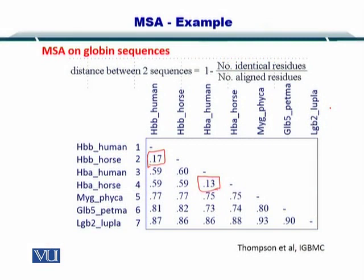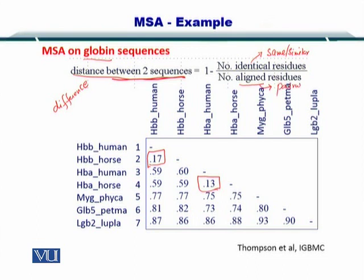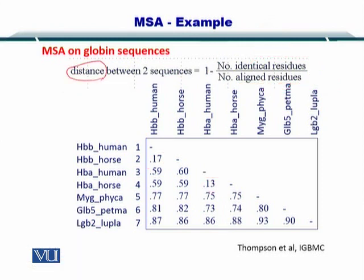Here we have an example of the globin protein from multiple species. The distance between two sequences, or simply the difference between two sequences, is equal to the number of identical or similar residues over the number of aligned residues in the pairwise alignment. You take this ratio, subtract it from one, and you arrive at the distance or difference between the two sequences. Once you have the distance between all sequences, you can construct something called a distance matrix.